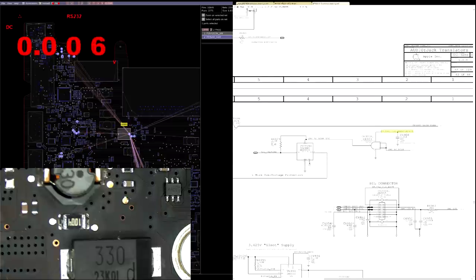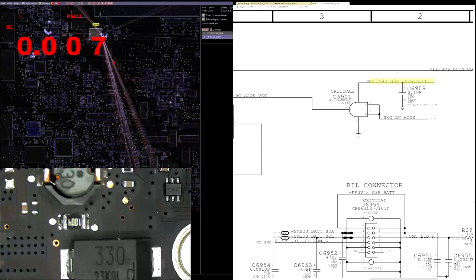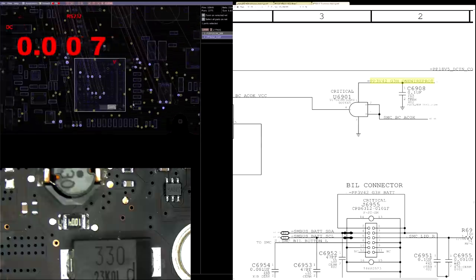Now we have to see what's going on in the U6901 area. So let's find U6901. U6901 is going to be up here.